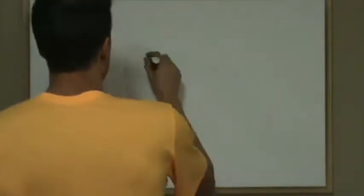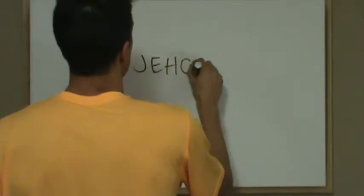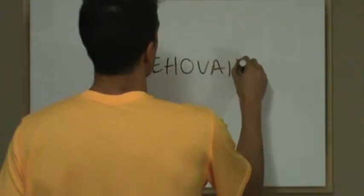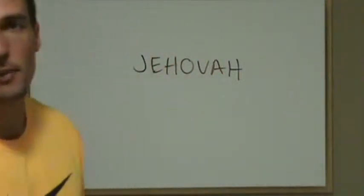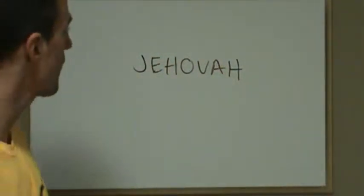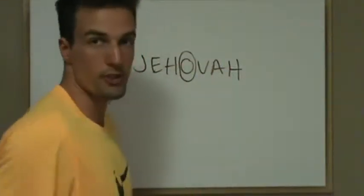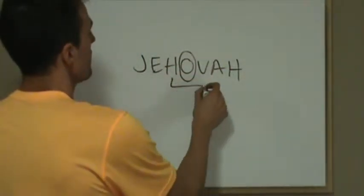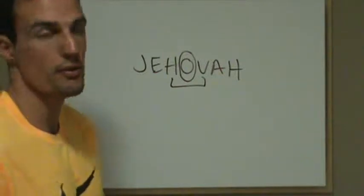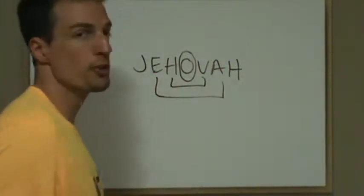Now we're going to solve the name Jehovah again in English, because this is so important. In Kingpin, you see that God is three persons proven mathematically in the very letters of Jehovah. The O at dead center is 15, which is king for the number 3. H and the V knit together to make 30, which is a multiple of 3. And the E and the A knit together to make 6, which is a multiple of 3.